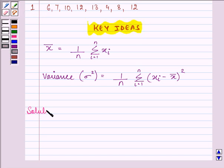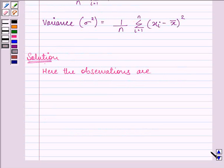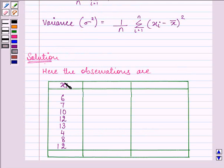Now let us start with the solution. Here the observations are, let us put them into a tabular format. Now here, we have the xi's, that is the observation as 6, 7, 10, 12, 13, 4, 8, 12. What we need to do is, first of all, we need to find out the sum of these observations. And on adding them, we have the sum as 72.